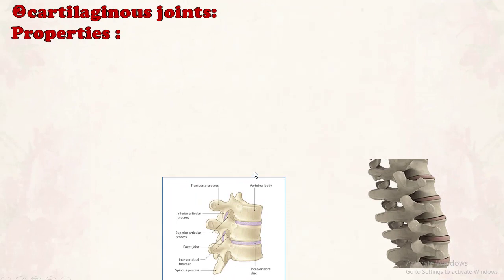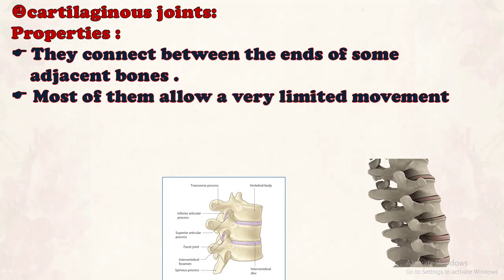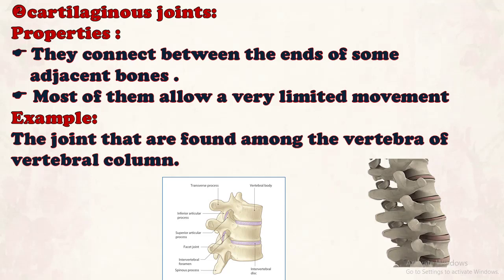Number two: cartilaginous joint. Properties of cartilaginous joints — they connect between the ends of some adjacent bones. Most of them allow only very limited movement, like the joints between the vertebrae, which allow limited movement and protect the bones from friction. An example: the joints found among the vertebrae of the vertebral column, which protect bones from corrosion and allow limited movement.